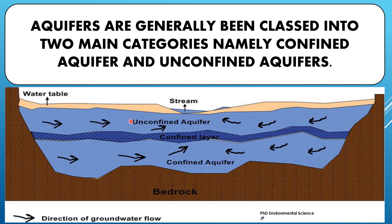Water in an unconfined aquifer can be replenished directly by precipitation and surface water. The confining layer is an impermeable or less permeable layer that separates the unconfined and confined aquifers, preventing water from easily passing through. The confined aquifer is located below the unconfined aquifer, sandwiched between two impermeable layers — one confining layer and bedrock. These impermeable layers restrict the flow of water into and out of the aquifer. Water in a confined aquifer is typically under pressure, which can cause it to rise above the top of the aquifer when tapped by a well.